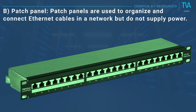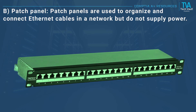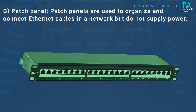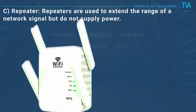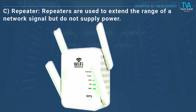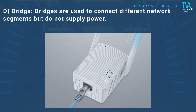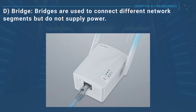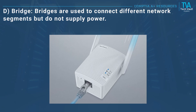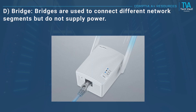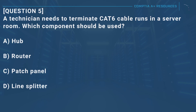B, patch panel: patch panels are used to organize and connect Ethernet cables in a network but do not supply power. C, repeater: repeaters are used to extend the range of a network signal but do not supply power. D, bridge: bridges are used to connect different network segments but do not supply power.